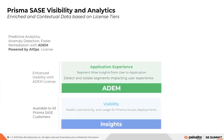These are our SASE Visibility Analytics licensing tiers. Prisma Access Insights gives you visibility about health, connectivity, and usage of Prisma Access deployments, and is available for all Prisma Access customers. The Prisma Access add-on requires an add-on license for Prisma Access ADEM Visibility, which gives you segment-wise insights from user to application.